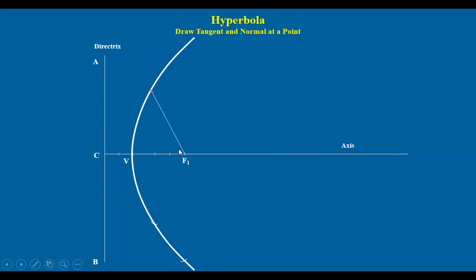Join this point with F1. At F1 draw a perpendicular line here onto the directrix. This intersects here at some point. Join this point with the given point here. This is the required tangent.